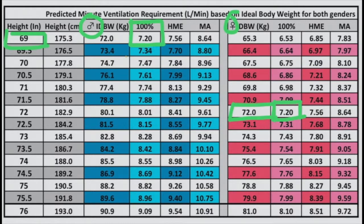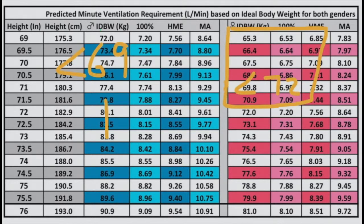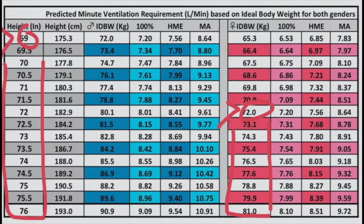Now let's see what happens when we use generic settings of 600 mL tidal volume and rate of 12 on every patient. This is a good way to make your profession obsolete because there are modes of ventilation that can do it more precisely. If your male patient is under 69 inches or your female patient is under 72 inches, you're going to be hyperventilating those patients. Additionally, if patients are deeply sedated or paralyzed, any male patient greater than 69 inches or female greater than 72 inches will be hypoventilated.